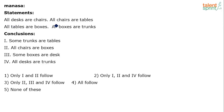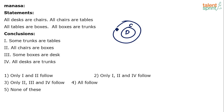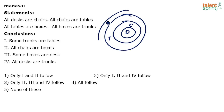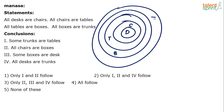For statements: all desks are chairs, all chairs are tables, all tables are boxes, and all boxes are trunks. Easiest basic diagram, I would say. Just go — all desks are chairs, all chairs are tables, all tables are boxes, and all boxes are trunks.